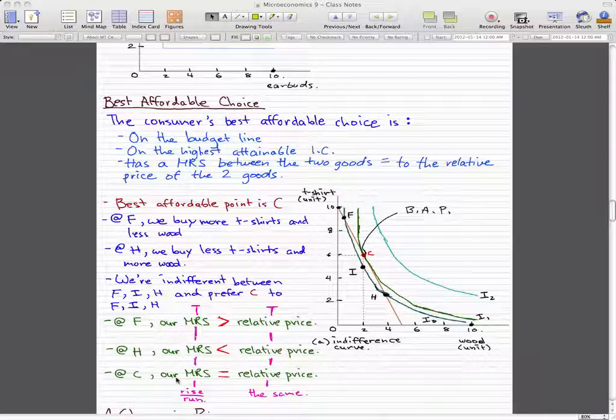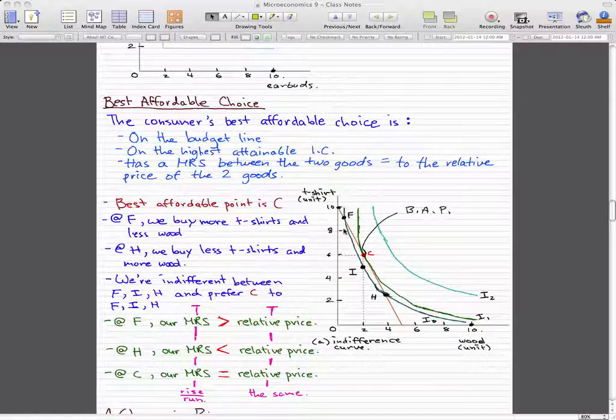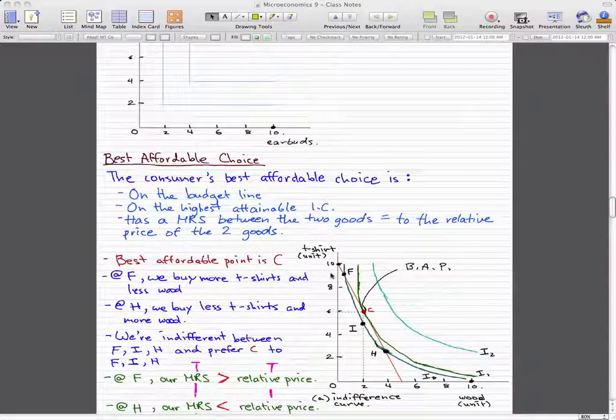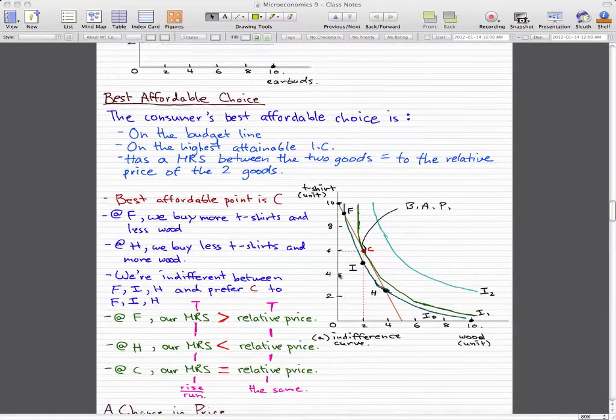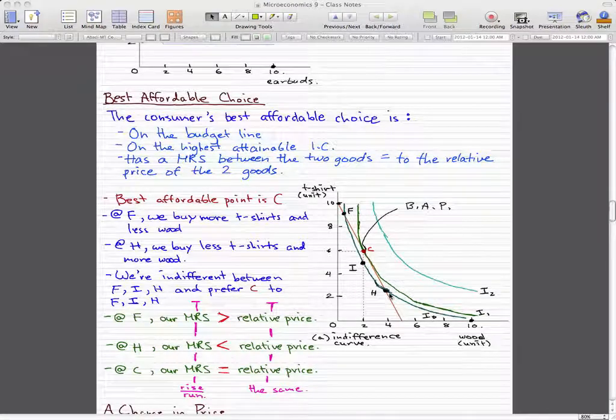But the marginal rate of substitution, on the other hand, will change. Because at point F, if we do the rise over run technique that we just learned, it will give us a different number than at point H, which will give us a different MRS than point F, because we will be using different rise over run numbers to calculate the MRS.